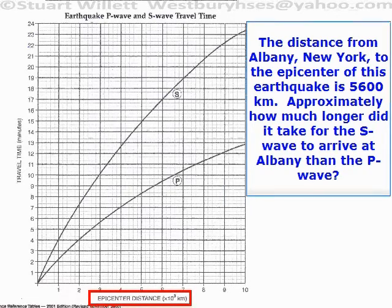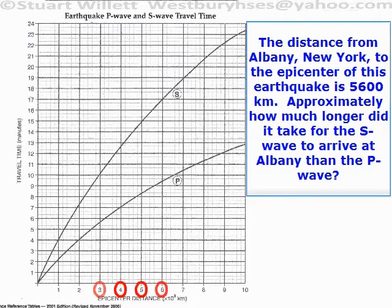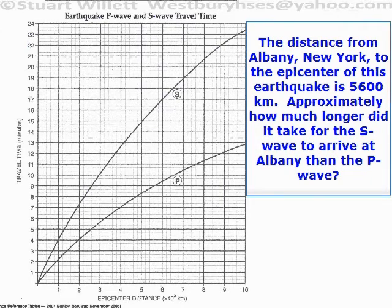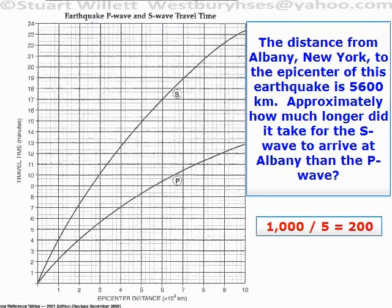Down at the bottom, see where it says epicenter distance — that's in thousands of kilometers. You see these numbers 1, 2, 3, 4, 5, 6, 7, 8, 9, 10. Each one of those is 1,000, so 1,000, 2,000, 3,000. Between these, there are 4 little lines which divide it into 5 little boxes. So if you divide 1,000 kilometers by 5, you get 200. So each little box is 200 kilometers.